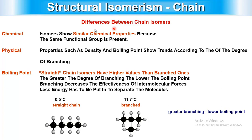Differences between chain isomers: chemically, they show similar properties because they have the same functional group. Physically, density and boiling point follow a trend based on the degree of branching. Straight-chain isomers have a higher boiling point than branched ones. For example, N-butane has a boiling point of -0.5°C, while 2-methylpropane (the branched isomer) has a boiling point of -11.7°C.